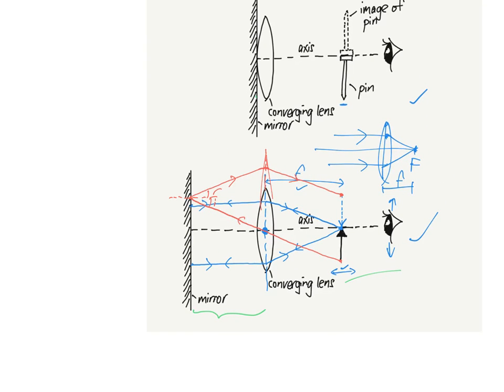Whether the lens is very near to the mirror in this case, or there's a distance here, it doesn't make a difference. Because these two rays, when you get the image to coincide with the object, the rays here will be parallel to the principal axis.